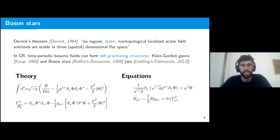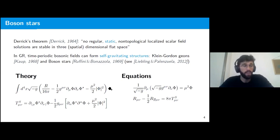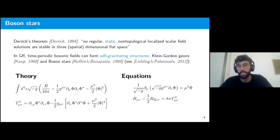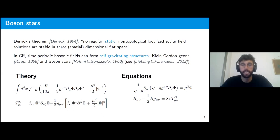The theory we are looking at is basically general relativity. You can see the first term in the action is just the Hilbert-Einstein part with the Ricci scalar, and then we include matter as a massive scalar field — the usual kinetic terms, phi is the scalar, and a mass-like potential mu squared. The equations that come out by varying the action with respect to the spacetime metric g_mu_nu and the field phi are the Klein-Gordon equation in spacetime g_mu_nu with source term mu squared phi, and the usual Einstein equation with matter on the right-hand side.